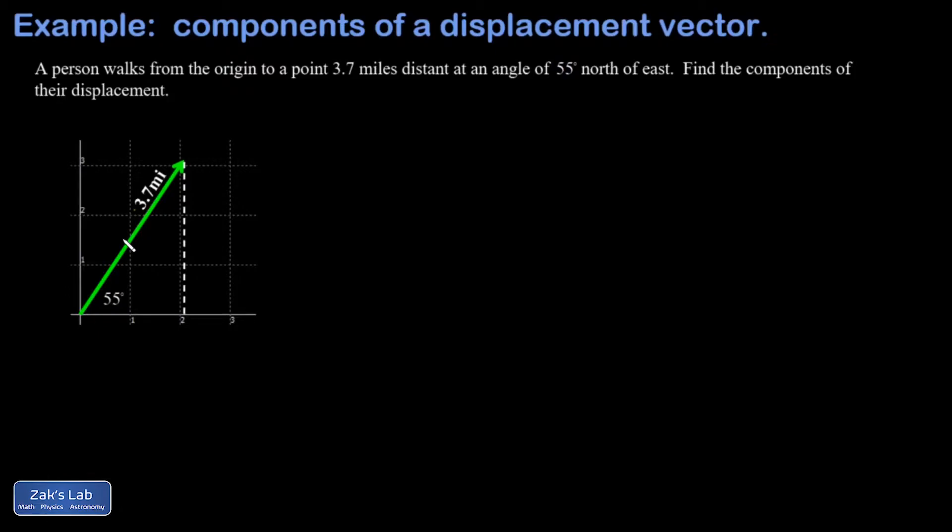We start by drawing a dashed line vertically down to the x-axis from the tip of the vector, allowing us to recognize a right triangle. We then use right triangle trigonometry to find the length of each side.